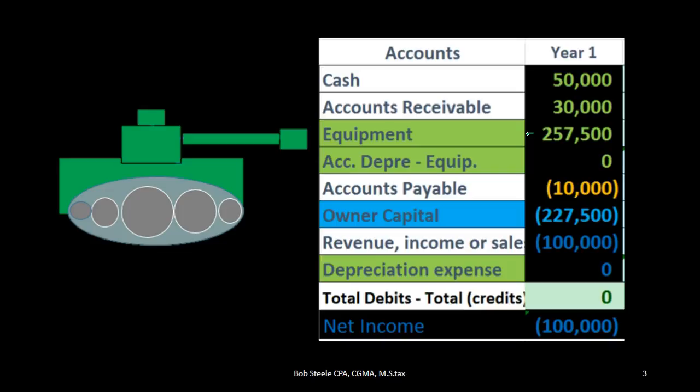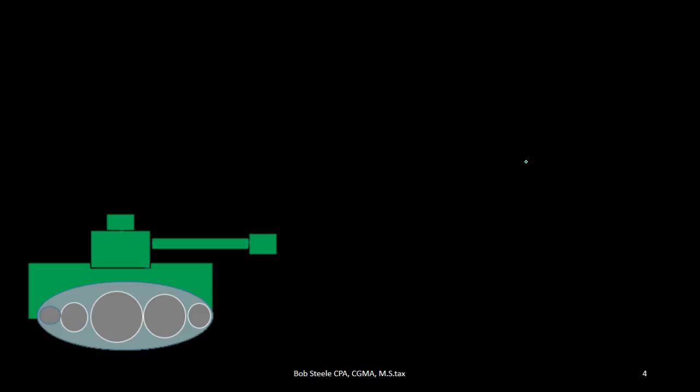That tank will go down in value; however, it won't go down in quantity as would happen with something like inventory or supplies. Therefore we need to calculate how we're going to allocate that cost over time, even though the quantity will remain the same. We're going to use depreciation and accumulated depreciation in order to do that. We'll use the most common, intuitive depreciation method — the straight-line method.